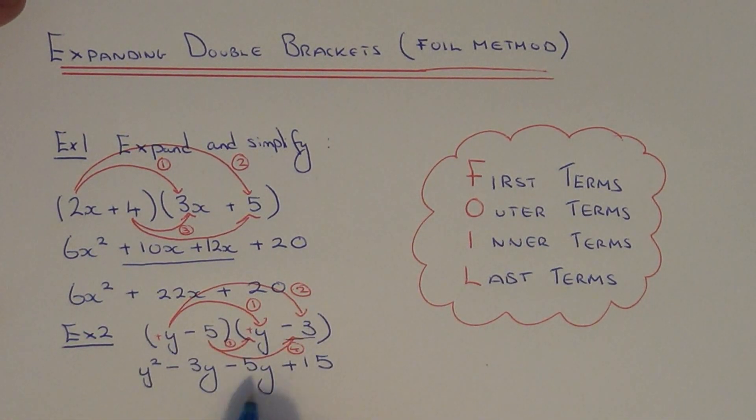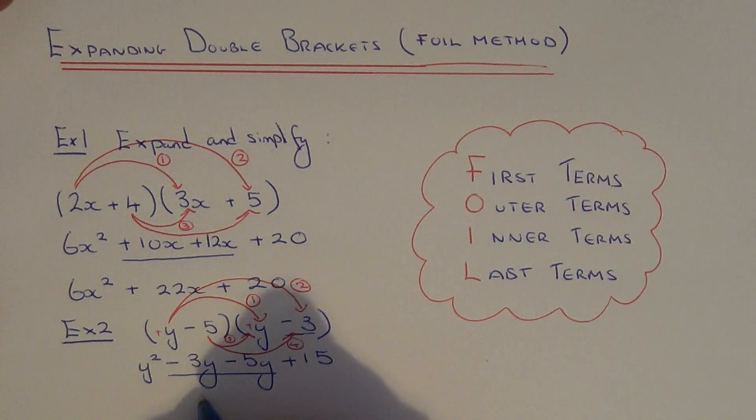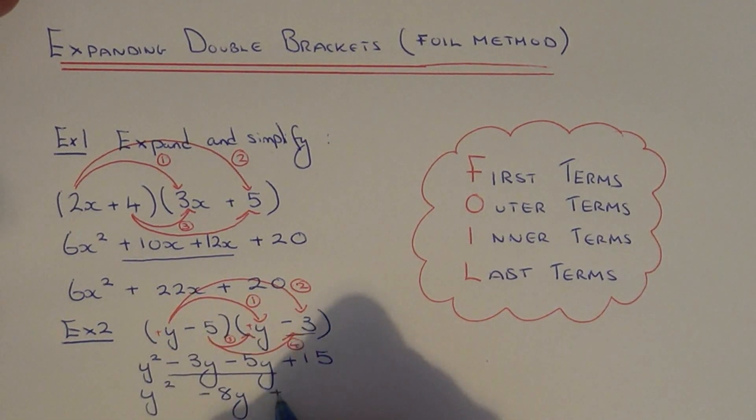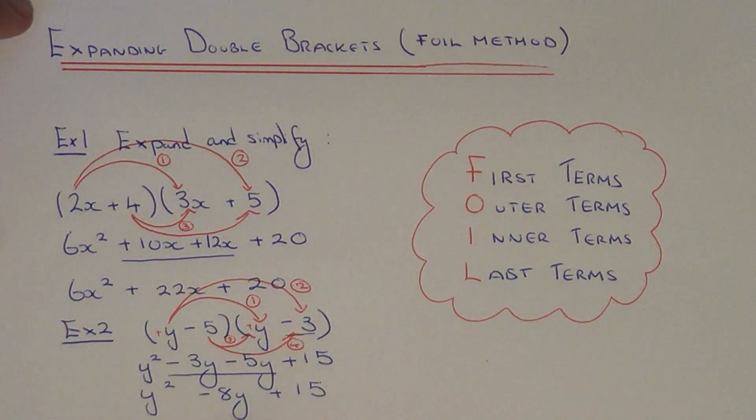So all we have to do now is simplify the middle two terms. So in the middle you've got minus 3y minus 5y. So that is minus 8y. And then just copy the y squared and the plus 15 down onto the final line.